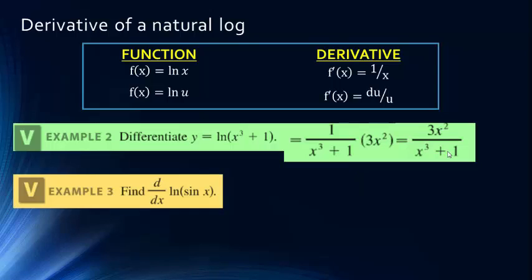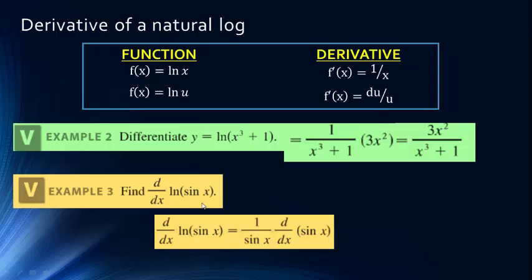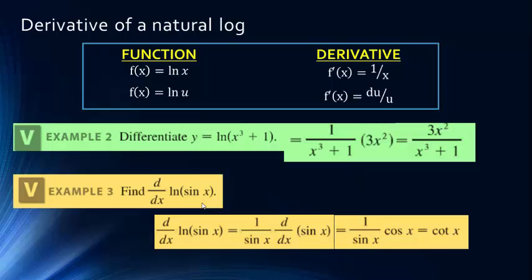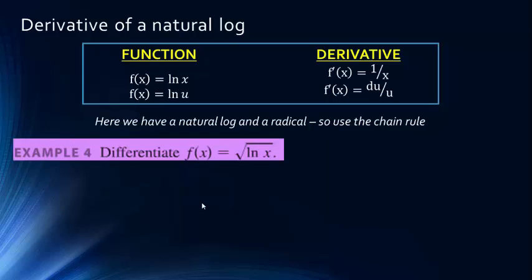Let's find the derivative of the natural log of sin x. This is a chain rule problem: it's not just ln x, it's ln(sin x). We have 1 over sin x times the derivative of sin x. The derivative of sin x is cosine x, so we get cosine x over sin x, which is simply cotangent x.